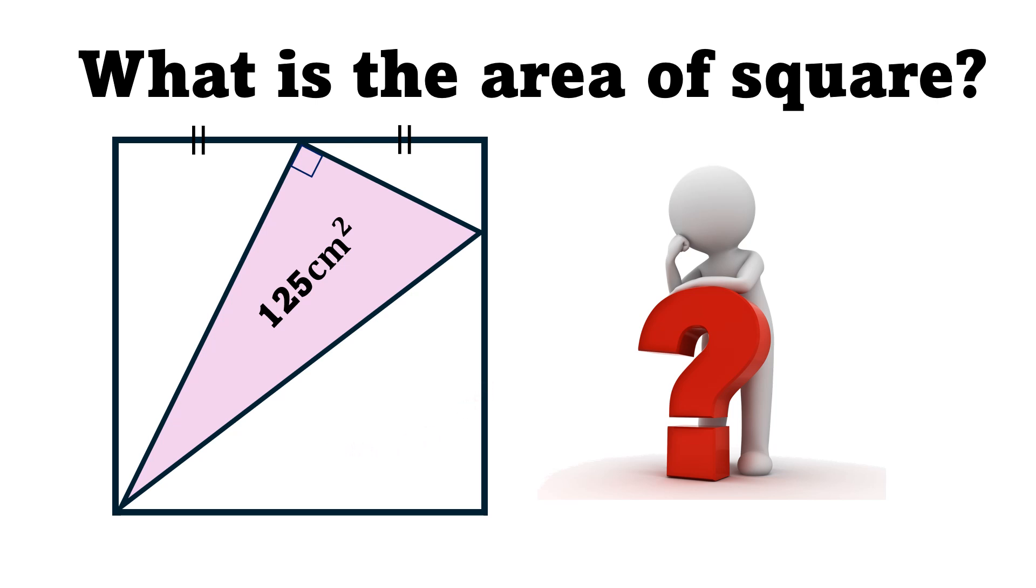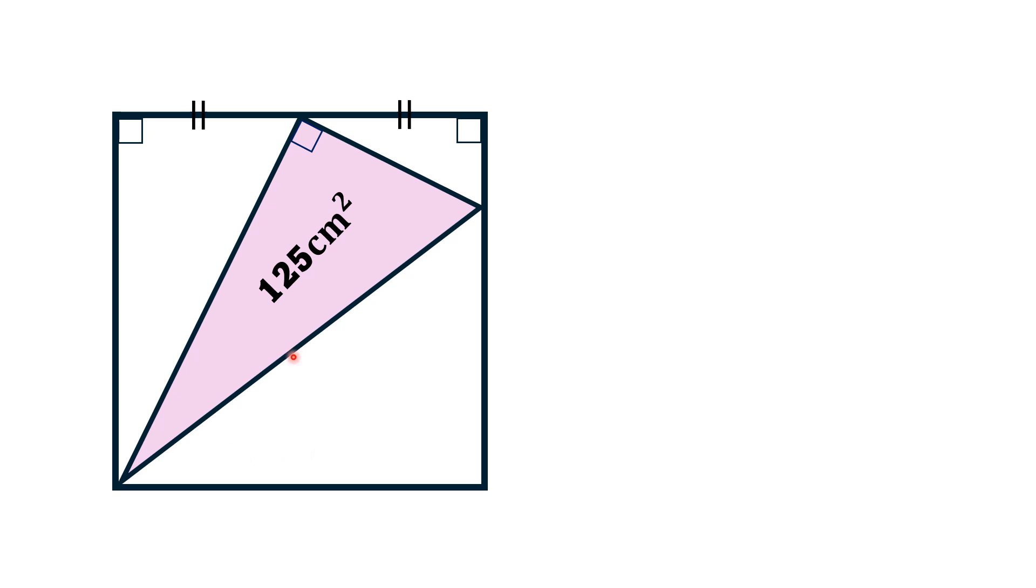Let we move towards the solution. First of all, we label this square as A, B, C, D, and also these two points as P, Q. Labeling is now complete. Let we call this length PC as a. Since PC length is equal to PD, therefore this length is also a.